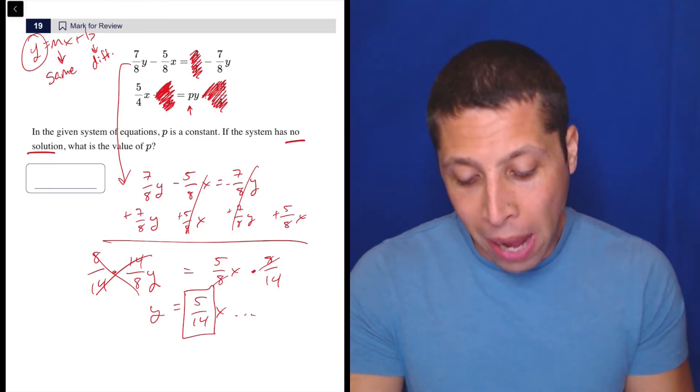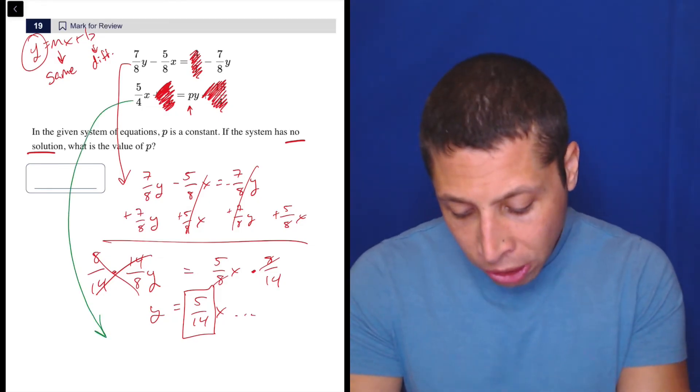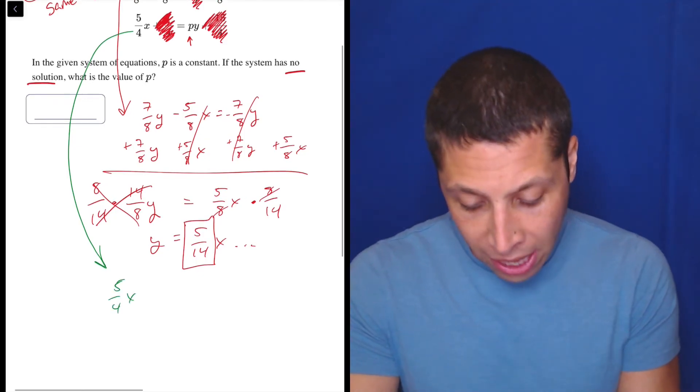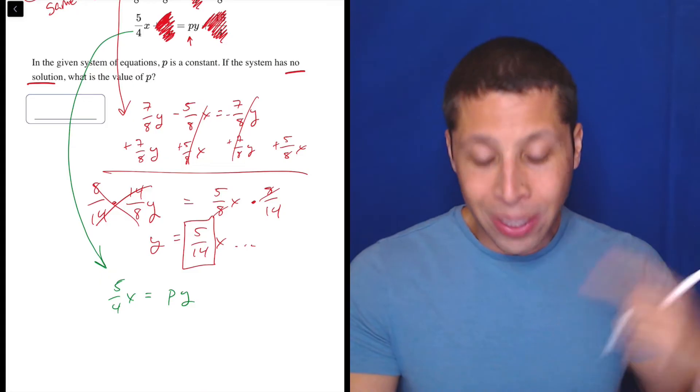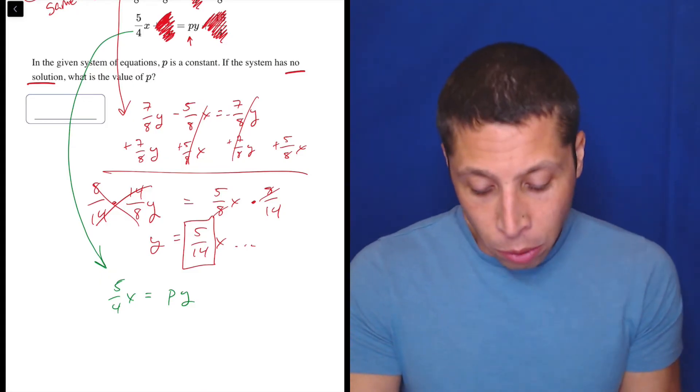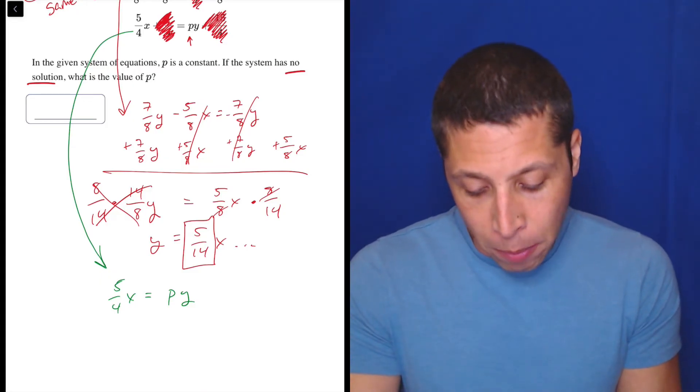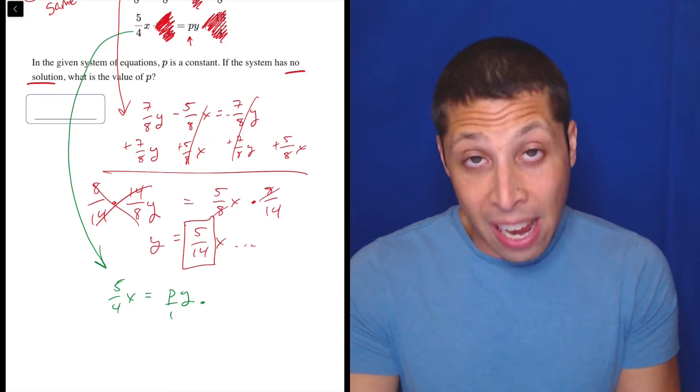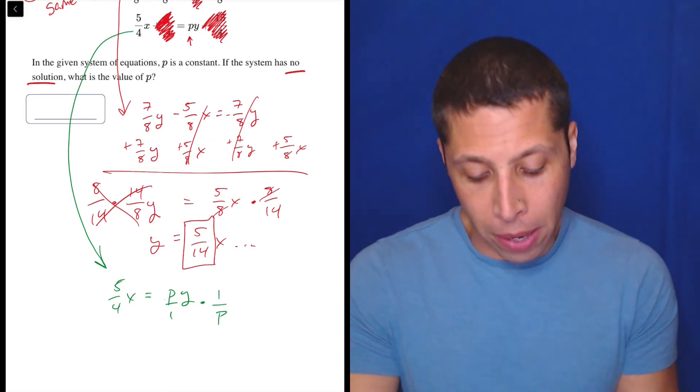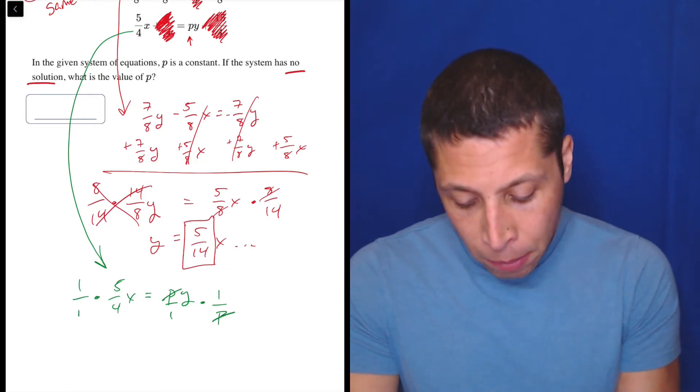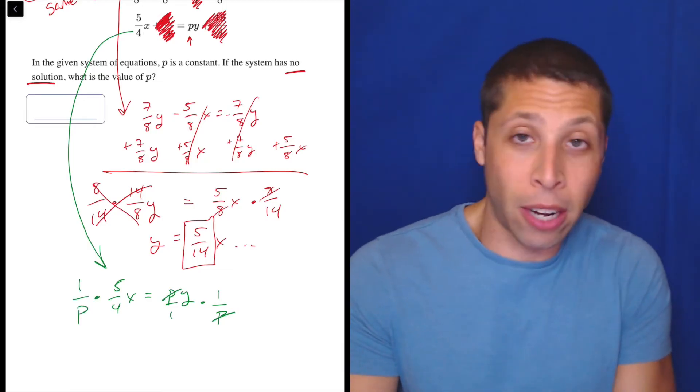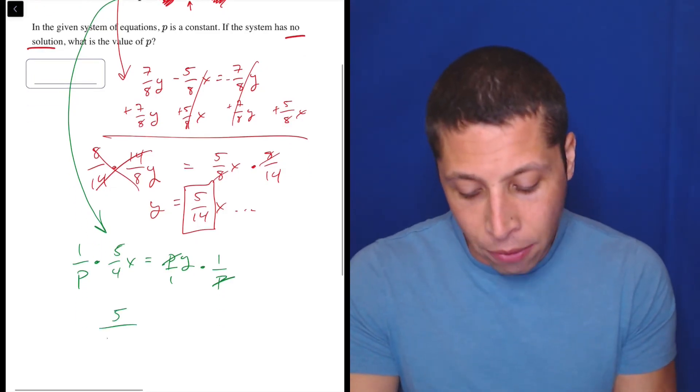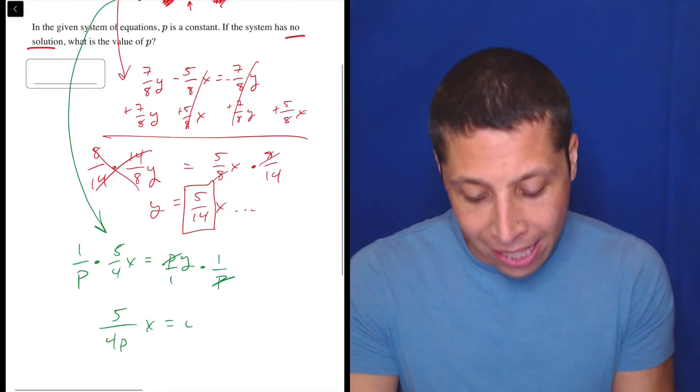But now we have to do the same thing for the bottom equation. And so this one's actually easier, but you might think you don't have to do much. So we have five-fourths x is equal to py. So again, we need to get y alone. So in order to do that, we're going to get rid of the p. So we can divide by p, but for the sake of thinking about fractions, it's the same as multiplying by one over p. Because p on the top, p on the bottom is going to go away. But if I do that here, what's convenient is I don't have to think about dividing fractions. I can just be like, oh, okay, this is going to be five over four p x equals y.